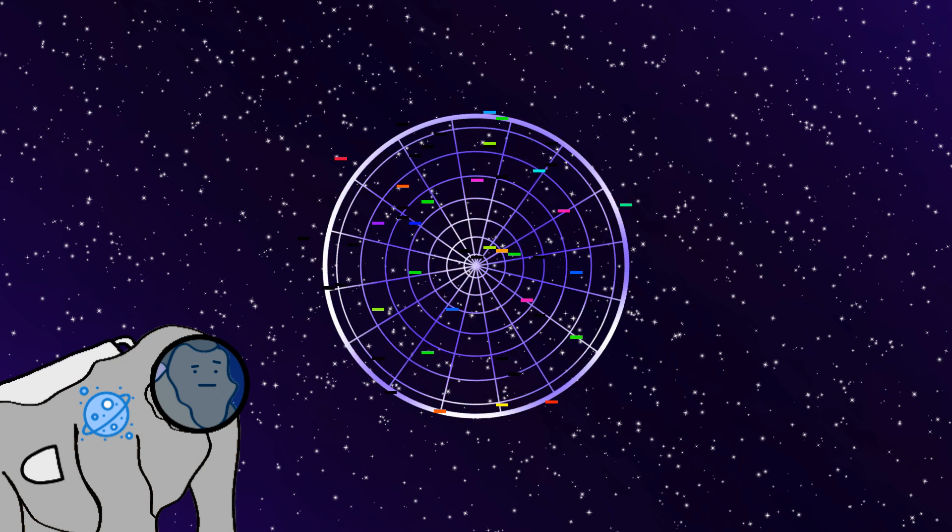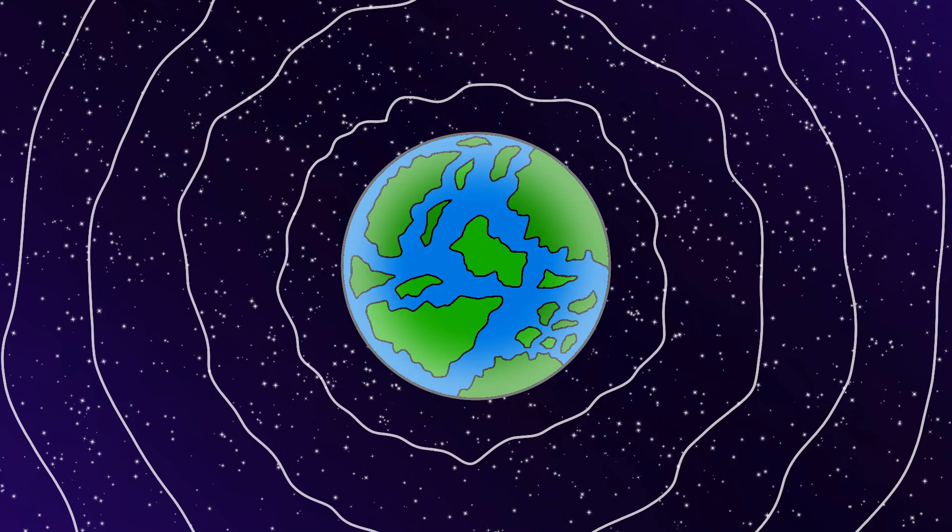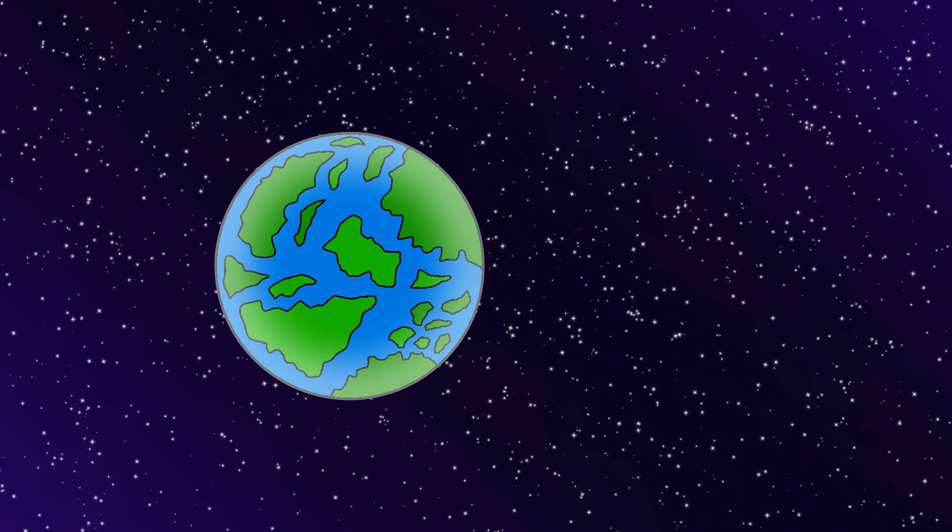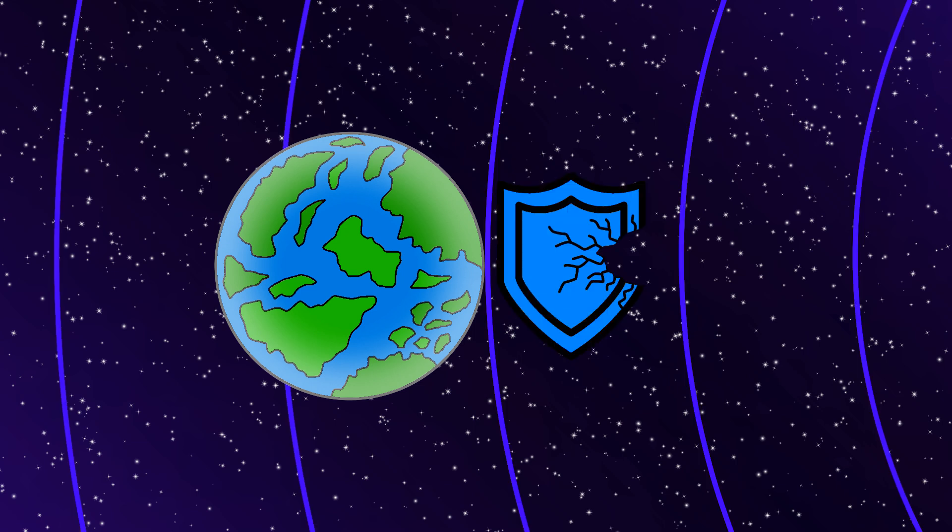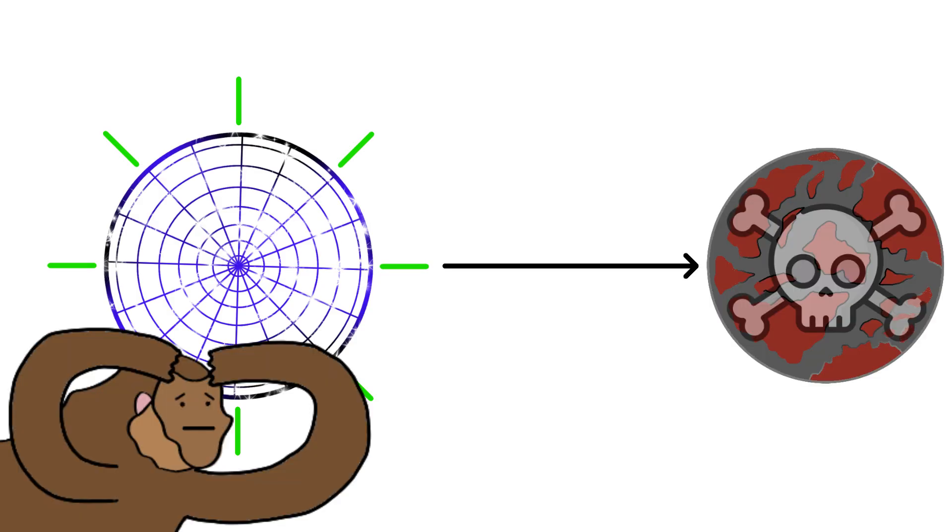And Monkey starts noticing weird effects. Because without direct natural sunlight, Earth's magnetic field begins acting strange. And Monkey's thinking, oh no, what if Monkey broke Earth's protection from cosmic radiation? And what if Monkey's perfect artificial environment is actually slowly killing the planet?